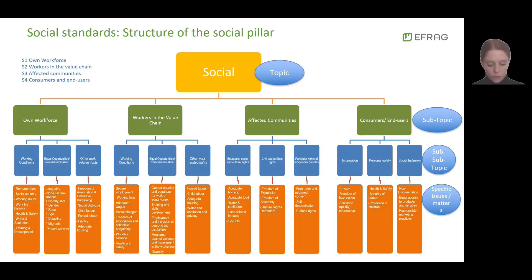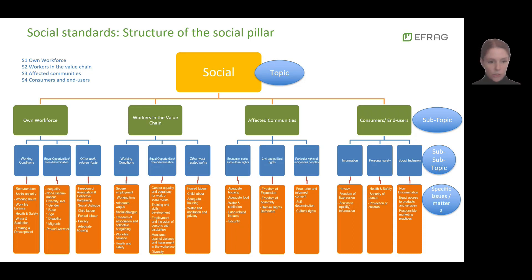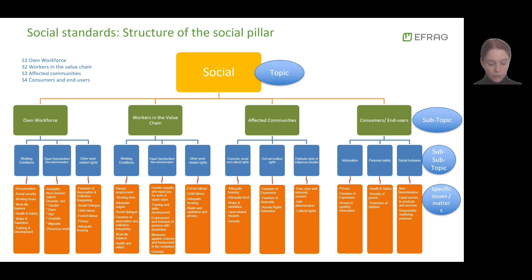The next slide provides a snapshot of the structure of the ESRS social pillar. You can see a total of four subtopics in the social area. These are own workforce, which is dealt with in a separate presentation, followed by workers in the value chain, affected communities, and consumers and end users. Within each of these three standards, there's an indication of relevant sub-sub-topics, as well as related issues which undertakings should take into account in their materiality assessment. Should companies identify any of these issues as material, these should then be reported following the disclosure framework provided by ESRS S2, S3 and S4.